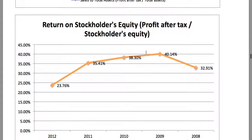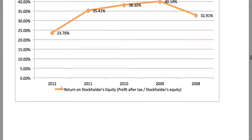Return on stockholders' equity, which provides an indication of the profit after tax in relation to the stockholders' equity position, reached a high point in 2009 and has since weakened a bit to 23.76 percent — also something to take note of.